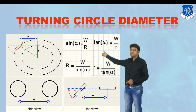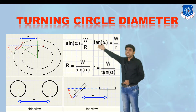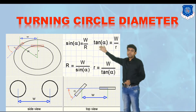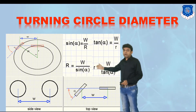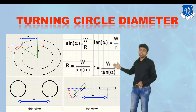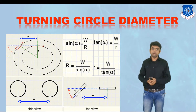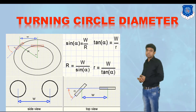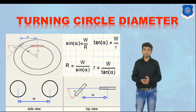In the diagram, the full circle is shown with front and rear wheels indicated. From the center of the circle, the distance to the front wheel axis is capital R, and to the rear wheel center is small r. The distance between front and rear wheels is indicated as capital W. Applying trigonometry: sin(alpha) = W/R, giving capital R = W/sin(alpha); and tan(alpha) = W/r, giving small r = W/tan(alpha). Doubling the radius gives the turning circle diameter.